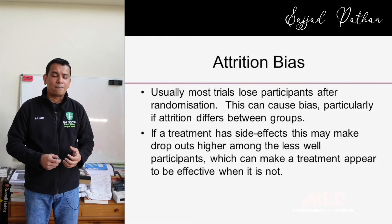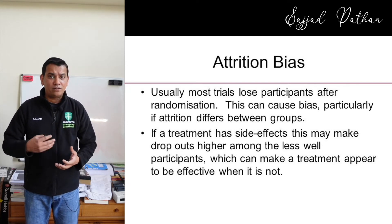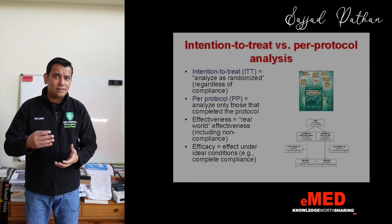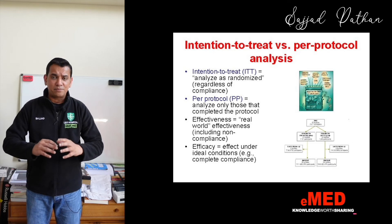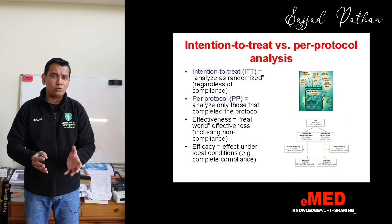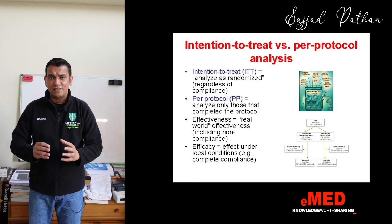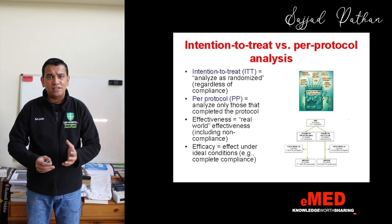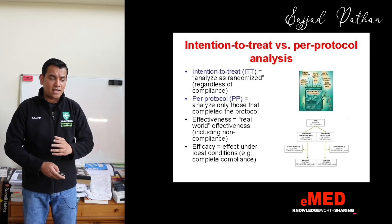Attrition bias means some people have dropped out of the study and are not considered in the final analysis — that is called per protocol analysis, including only those who followed the protocol. Intention-to-treat analysis, by contrast, uses everybody who was enrolled in the study for the final analysis. Let us now look at question number seven.